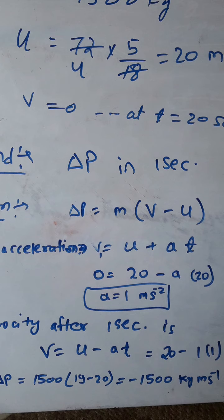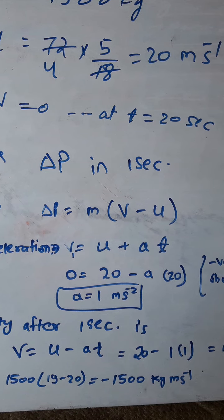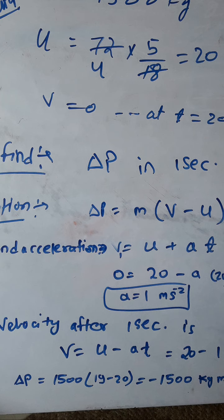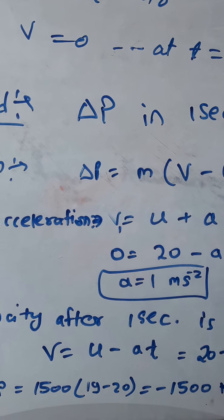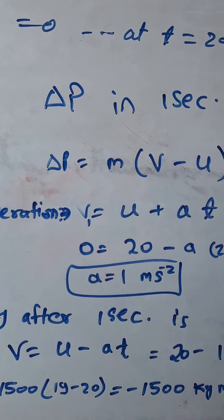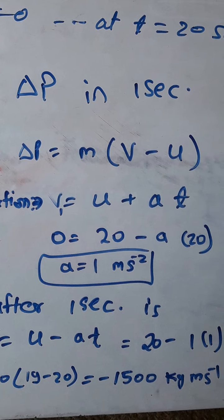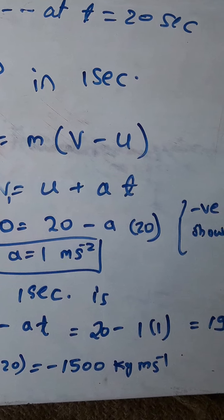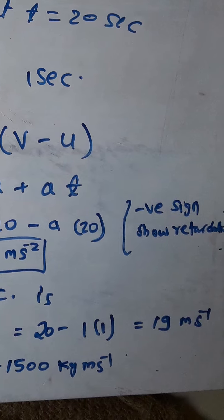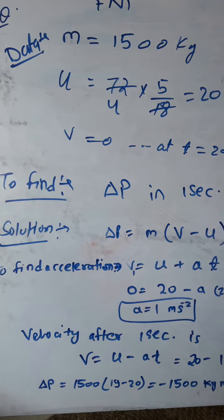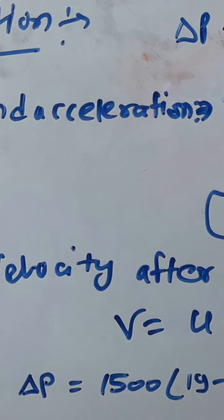We put a = 1 and time t = 1 second to find the velocity after 1 second. So v = u - at = 20 - 1 × 1 = 19. The final velocity at the end of 1 second is 19 meters per second.